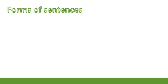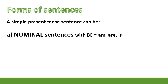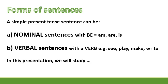Now let's look at forms of sentences. A Simple Present Tense sentence can be either A, a nominal sentence with 'be' — that is am, are, or is — or B, a verbal sentence with a verb, for example: see, play, make, write, etc. In this presentation, we will study nominal sentences.